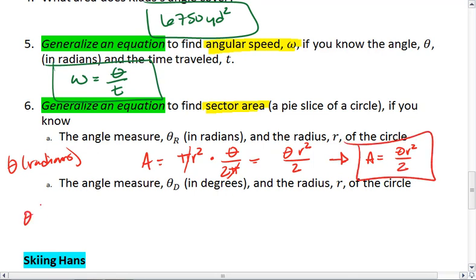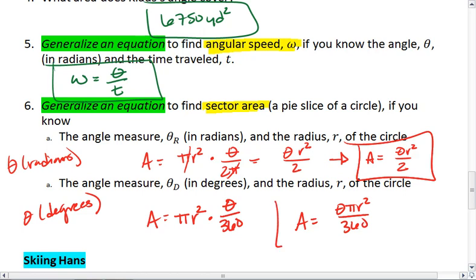If θ is in degrees, we get this next equation. Area is still going to be the area of the entire circle times the fraction we're working with. But to determine this fraction, we take θ that's in degrees and divide by 360. Thus, we get that area is θπr²/360. Two different equations.